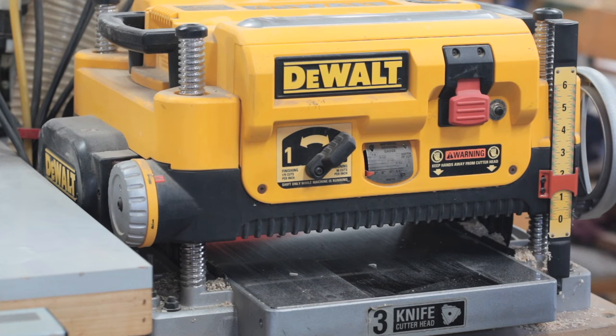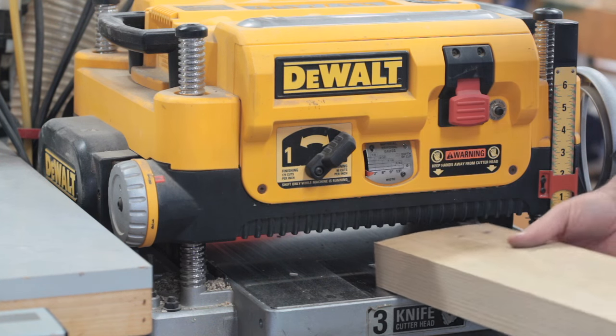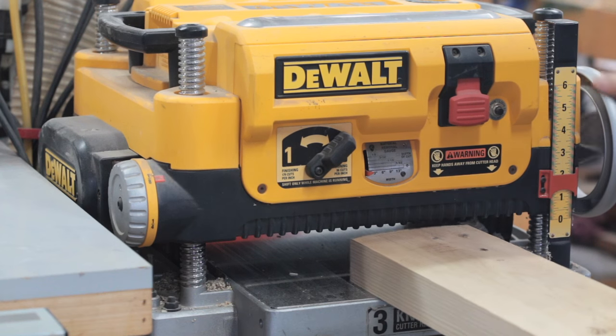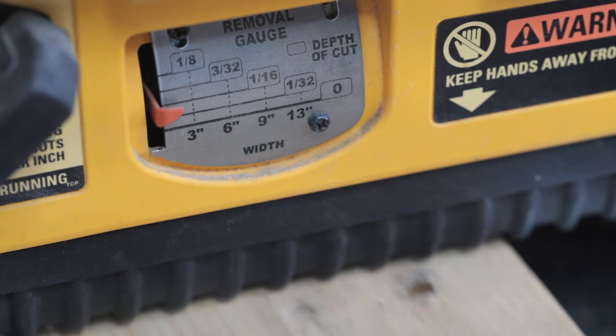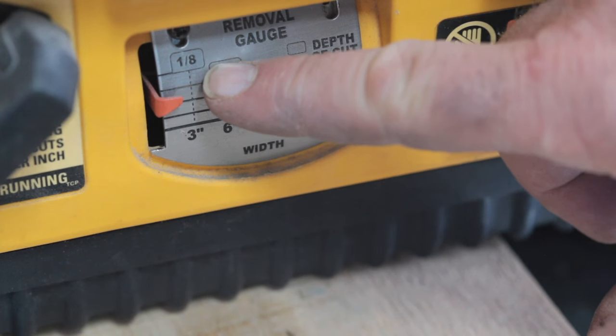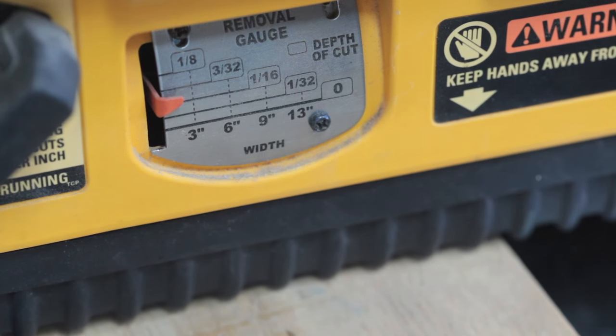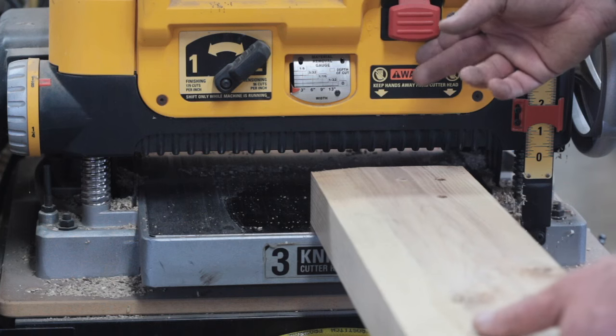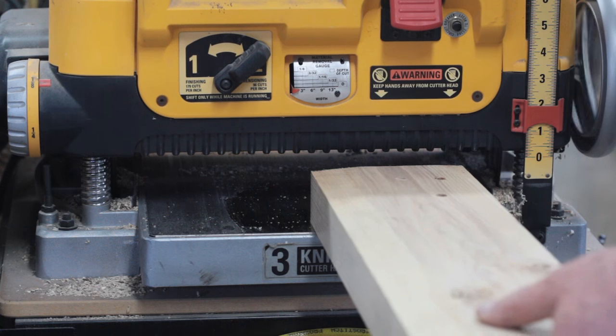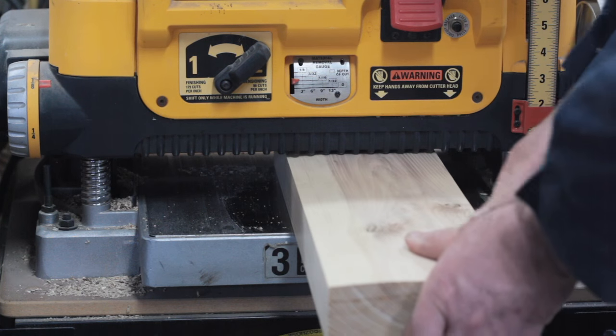The next step is to create a flat smooth straight second face using the thickness planer. I'm adjusting this machine for a depth of cut. This particular model has a visible indicator. I'm aiming for about a sixteenth of an inch of cut for this initial pass. So fire up the thickness planer and push that piece of wood through for the first time.